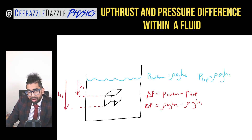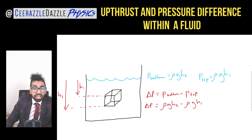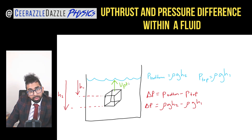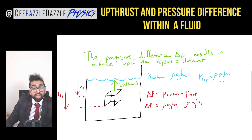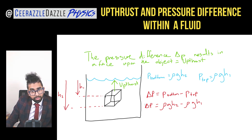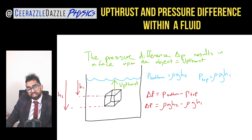You might be thinking why am I talking about the pressure difference? Well, the pressure difference will tell us how much upthrust acts on this object. The pressure difference delta p results in a force upon the object, which is the upthrust. So using the pressure difference we can actually work out the upthrust upon the object.